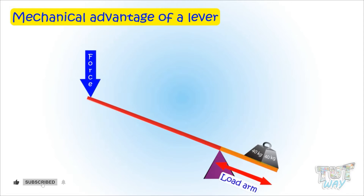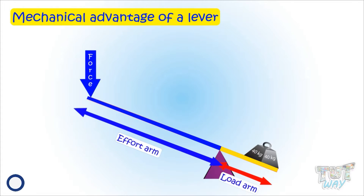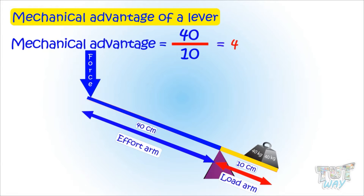This is the load arm of this lever — the distance from the load to the fulcrum — and this is the effort arm — the distance from effort to fulcrum. The length of the effort arm is 40 centimeters and the length of the load arm is 10 centimeters. 40 divided by 10 equals 4, so the mechanical advantage of this lever is 4.